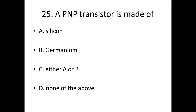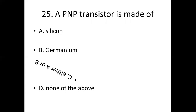Question 25: A PNP transistor is made of? Option A: silicon. Option B: germanium. Option C: either A or B. Option D: none of the above. Answer: Option C — either A or B.